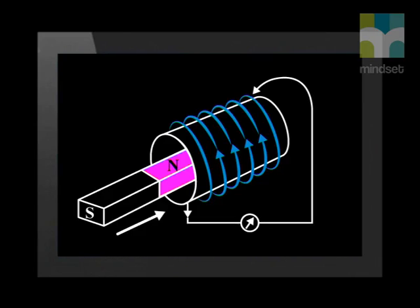This means that when a north pole moves into a solenoid, a current is induced in the solenoid. This induced current flows in such a direction that a north pole forms at the side of the solenoid where the magnet moves inward. Since similar poles repel, the two north poles repel each other. And when the north pole is removed from the solenoid, a current is induced that causes a south pole, which will attract the north pole being pulled out of it.